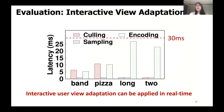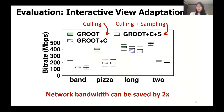Lastly, we show the performance of interactive view adaptation. Each bar graph shows the latency of applying culling, sampling, and encoding in milliseconds at the server — where encoding refers to re-encoding the color bytes after culling and sampling. All components combined can be applied in real time at the server to adapt to dynamic viewpoint changes. Furthermore, we can save network bandwidth by up to two times, comparing GROOT without user view adaptation, GROOT with frustum culling only, and GROOT with both frustum culling and depth-based sampling. Perceptual quality remained consistent across conditions.